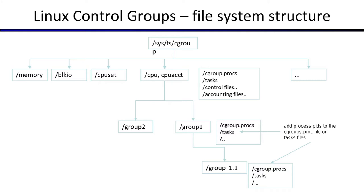Under this directory you will see the cgroup controls enabled. There are a few models to enable these — they can be combined or kept separated. You have /memory for memory controls, /blkio for I/O controls, /cpuset for multiple CPU structuring and CPU affinity, and /cpu,cpuacct — a combined CPU accounting and CPU control group in the same directory structure, likely because these two are usually used together. And then there are others too.